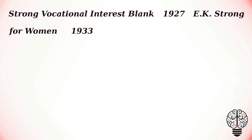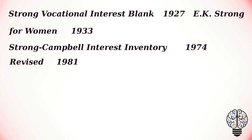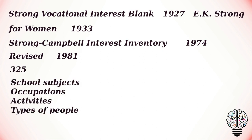A version for women was developed in 1933. In 1974, the Strong test was merged into the Strong-Campbell Interest Inventory, which was further revised in 1981. The test contains 325 items. Test takers are asked whether they like, dislike, or are indifferent to 325 items representing a wide variety of school subjects, occupations, activities, and types of people. They are also asked to choose their favorite among pairs of activities and indicate which of 14 selected characteristics apply to them.